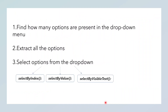When we are inspecting the dropdown menu, the first thing we'll do is find how many options are present in the dropdown menu. We will extract all those options and then select them through three methods: selectByIndex, selectByValue, and selectByVisibleText. So just open your IntelliJ IDE first.